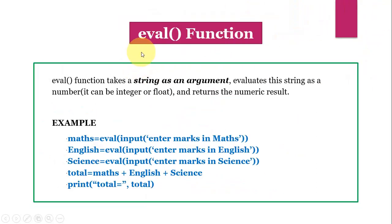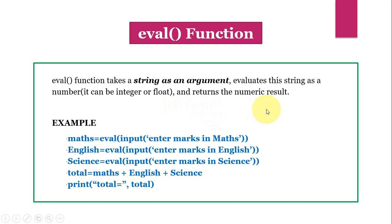Now let us talk about the eval() function. The eval() function takes a string as an argument, evaluates it as a number — which can be either integer or float — and returns the numeric result.